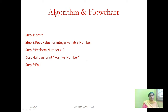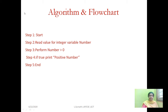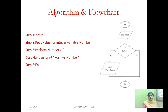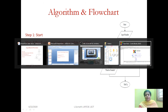If the condition is true, print 'positive number'. In the flowchart, we use a parallelogram symbol for input and output. I read the number as input, check the condition — if greater than zero, display 'positive number', otherwise exit the program. With this, we will see the execution of the program.